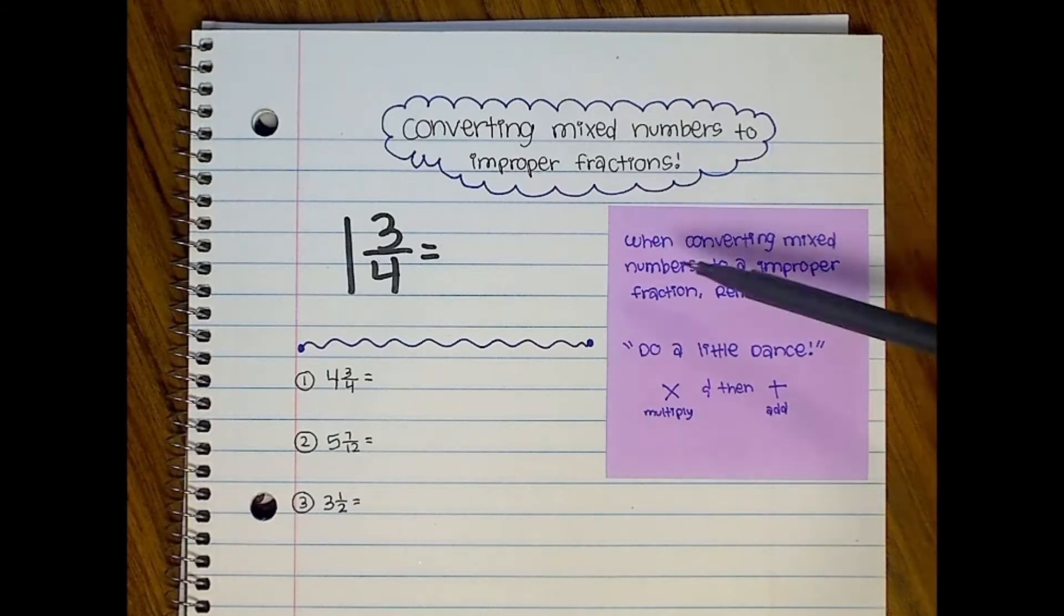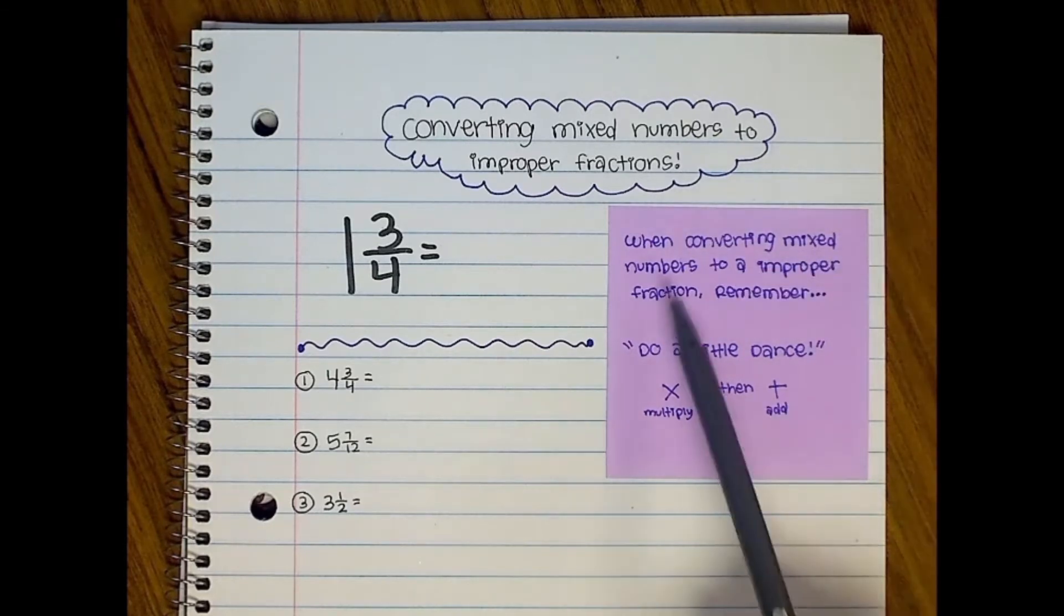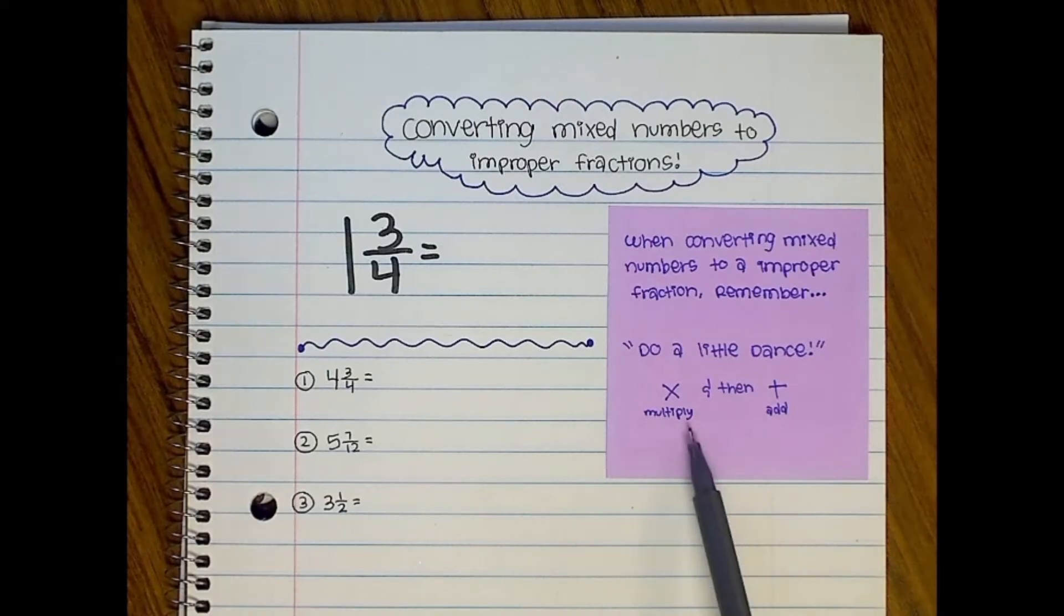So when converting mixed numbers to an improper fraction, remember to do a little dance, which basically means you're going to multiply and then add.